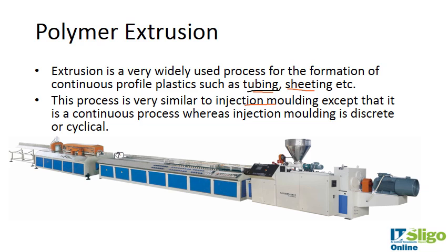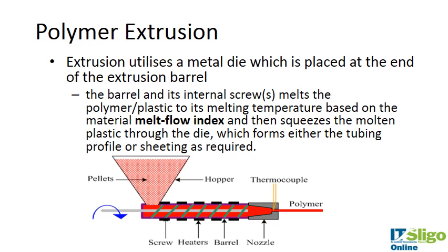Extrusion is similar to injection molding — the concept is very much the same — except the process is continuous. In injection molding there is one mold and one piece per mold, so it's discrete. In extrusion, material goes into a feed hopper through a screw and is extruded in a continuous fashion, with a cutting device which cuts the tubing into pieces.